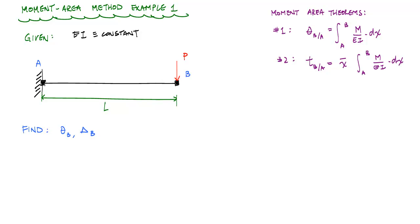We're going to start off pretty simple here. I've got a cantilever beam with a concentrated load P at point B and the length of L. The EI, a.k.a. flexural rigidity, is constant. I've written for us the moment area theorems, number one and number two — just the equations that are needed.